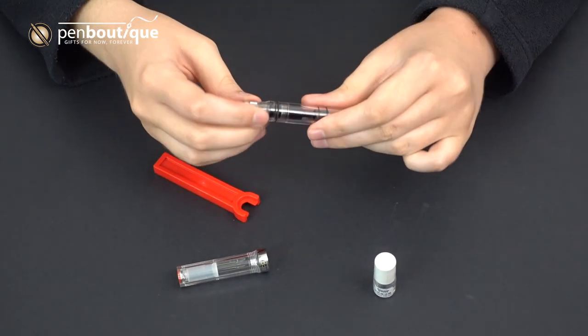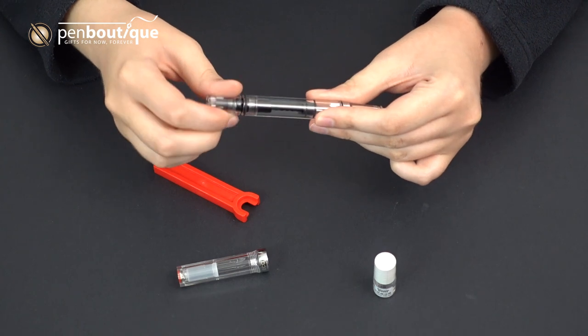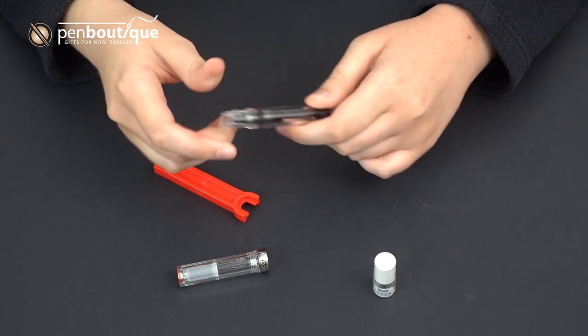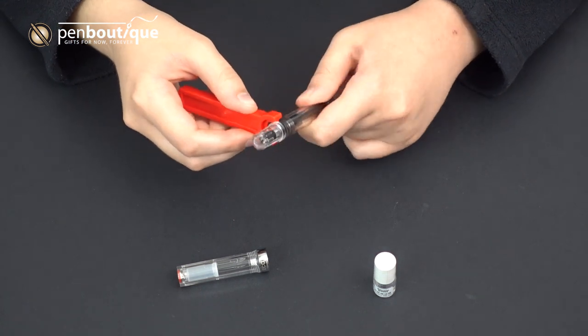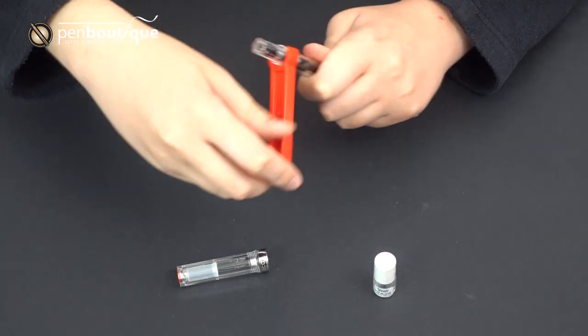So take off the cap there and you want to unscrew the end cap and that's going to extend the plunger fully. You can use the included wrench with the TWSBI box and just fit it right there in between the space that you just created.